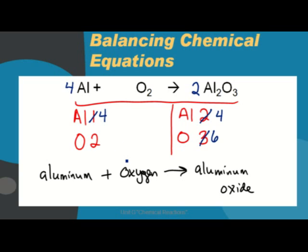However, I still need to balance my oxygens. I have 2, but if I multiply it by 3 using a coefficient, I now have 6. This is a balanced equation. 4 aluminum plus 3 oxygen molecules gets me 2 aluminum oxide.